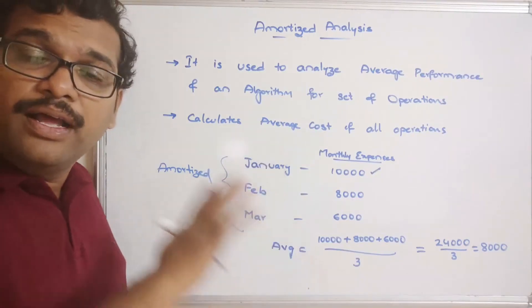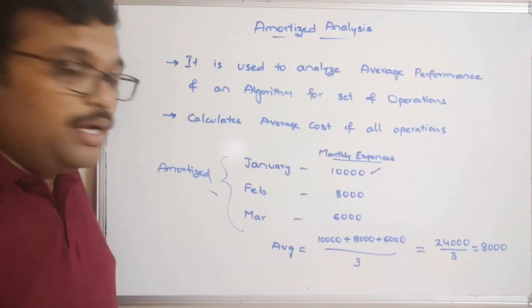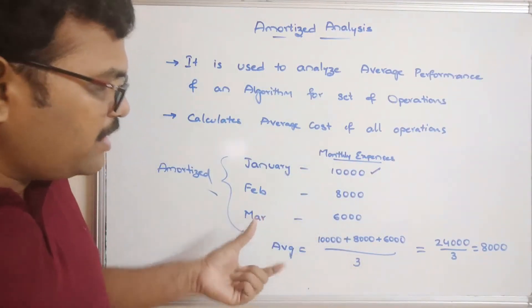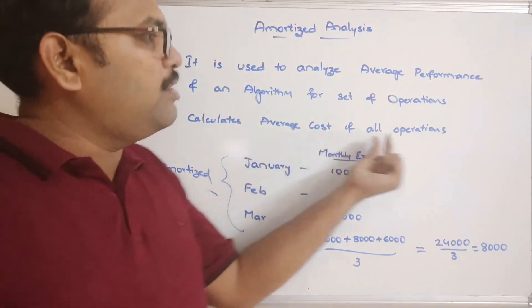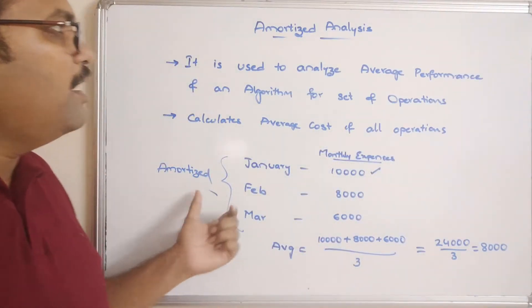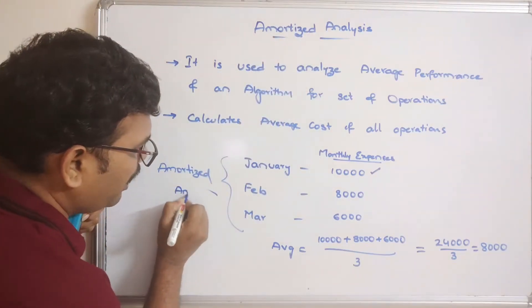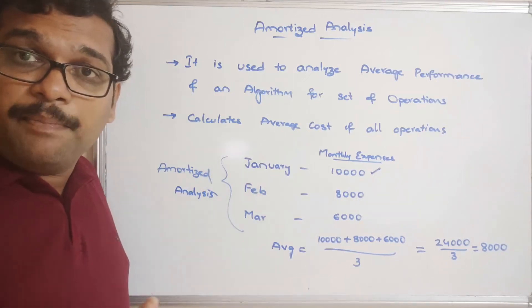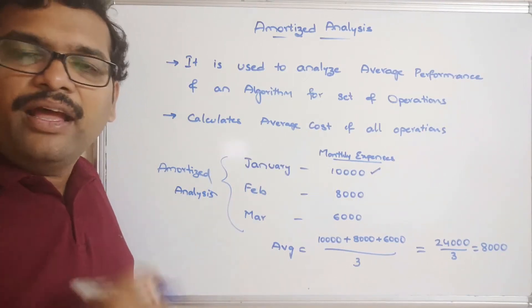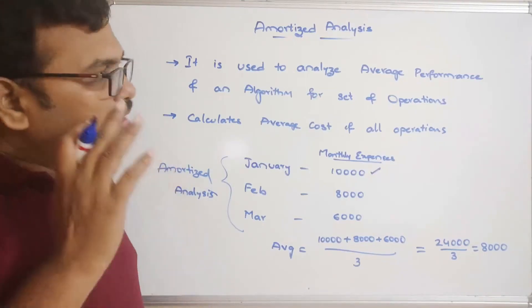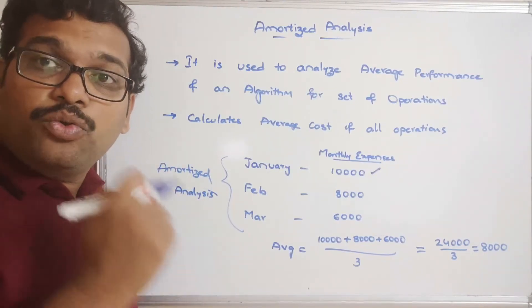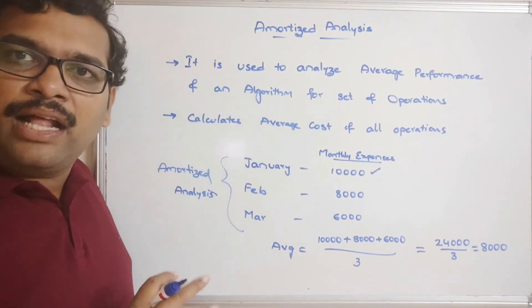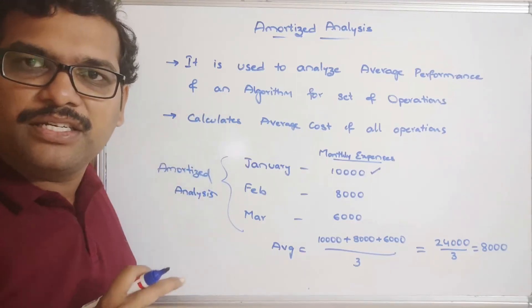The same thing we have to do for an algorithm. Based on the operation, we should not always consider the highest complexity. We need to calculate the average cost of all the operations to get the amortized time complexity. Now we will take an actual example using the array data structure to find the worst-case complexity of inserting an element into a dynamic array, and then apply amortized analysis to compare both.